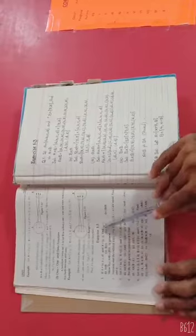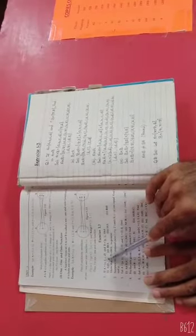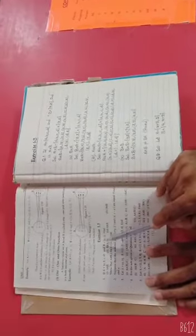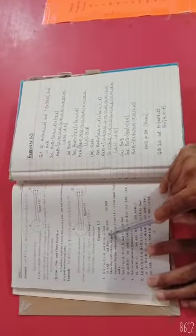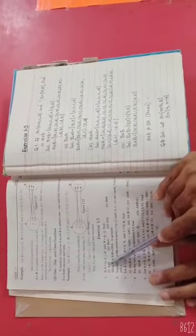Assalamualaikum student, we start exercise 1.3. Open your book on page number 18, question number 1. If A is equal to {a,b,c,d} and B is equal to {y,z}, find question number 1 part 1: A cross B.